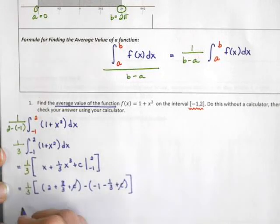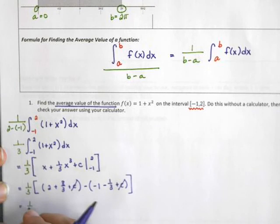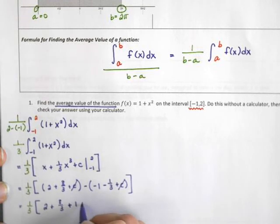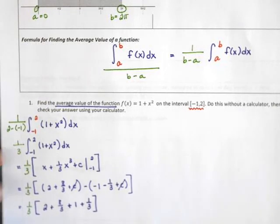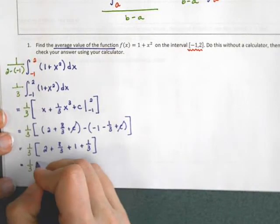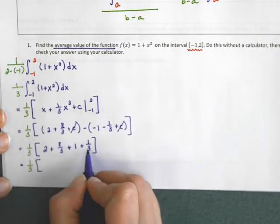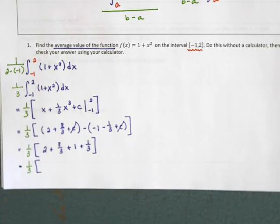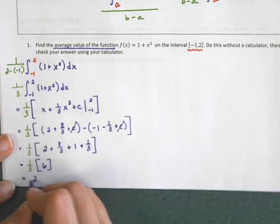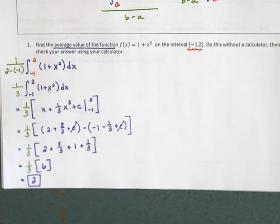The c's cancel, and I have 1 third times the result of the integral. I have 2 plus 8 thirds, and distributing the negative gives plus 1 plus 1 third. Simplifying: 2 plus 1 is 3, and 8 thirds plus 1 third is 9 thirds, which is also 3. So this gives 1 third times 6, and 1 third of 6 is just 2. My average value is 2.